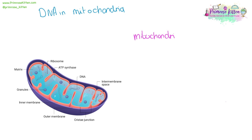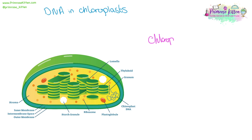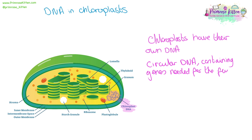Mitochondria have their own DNA. These are small circular sections of DNA which are passed from the mother via the egg cells. Chloroplasts also have their own DNA. This is circular DNA and it contains genes that are needed for the function of the chloroplast.